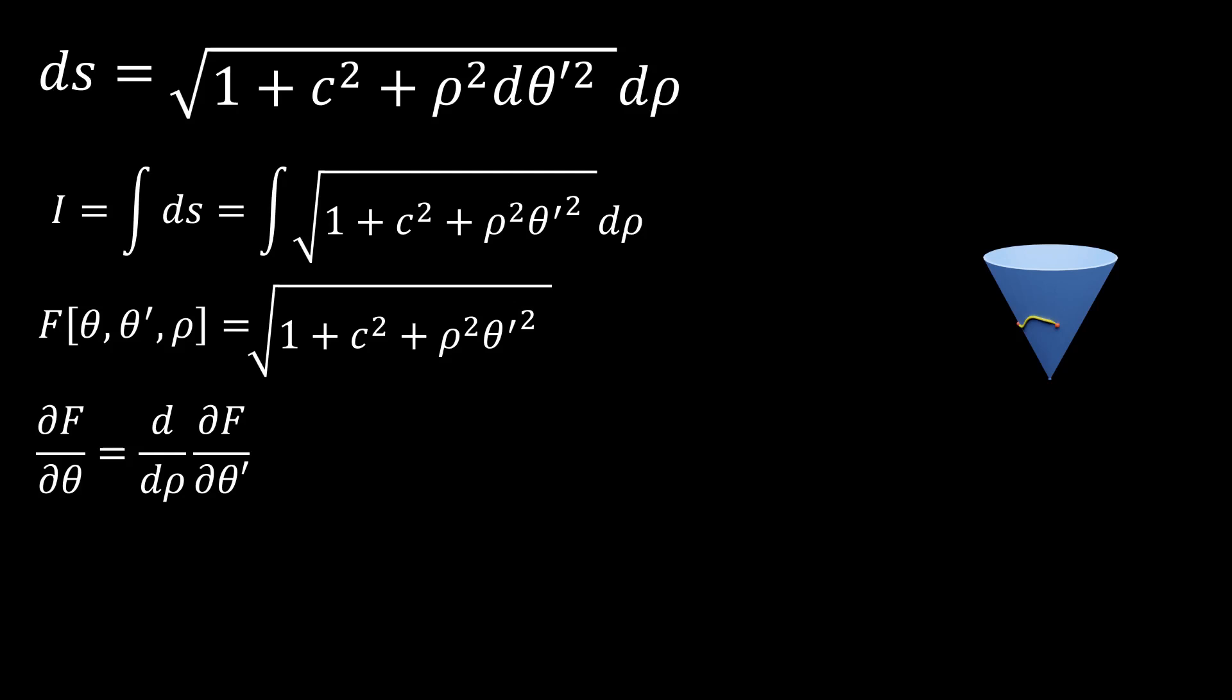First, we'll note that we have the special case that f does not depend explicitly on theta, which means its derivative with respect to theta is 0. So df by d theta prime is equal to some constant, which I'll call d. If we take this derivative, we get rho squared theta prime divided by the functional itself, and that whole thing is equal to d.